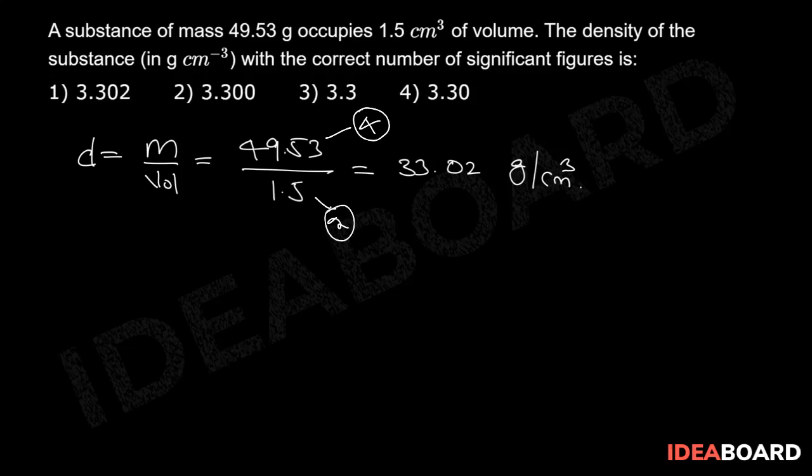So if we round off to two significant figures, the answer will be 33 grams per cm³, which I can write as 3.3 × 10¹ grams per cm³.